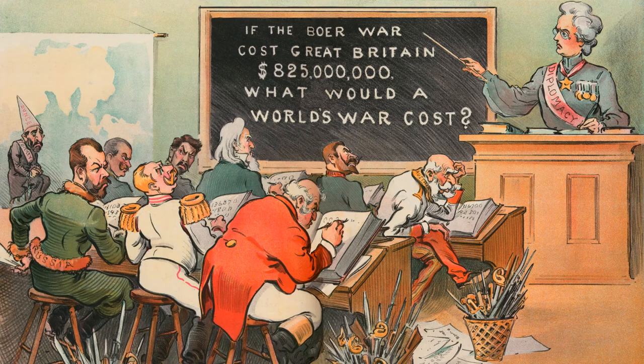This cartoon, created in 1903, wanted to draw attention to the risks of war. The cartoonist therefore placed the world leaders in a classroom. Their teacher, labelled diplomacy, has asked them to figure out how much a world war would cost, given that the Boer War in South Africa had recently cost Britain $825 million.